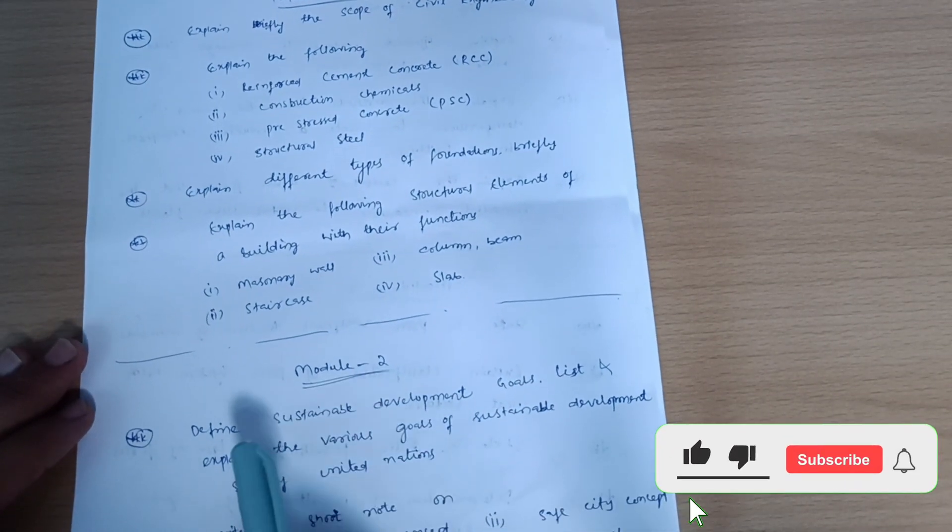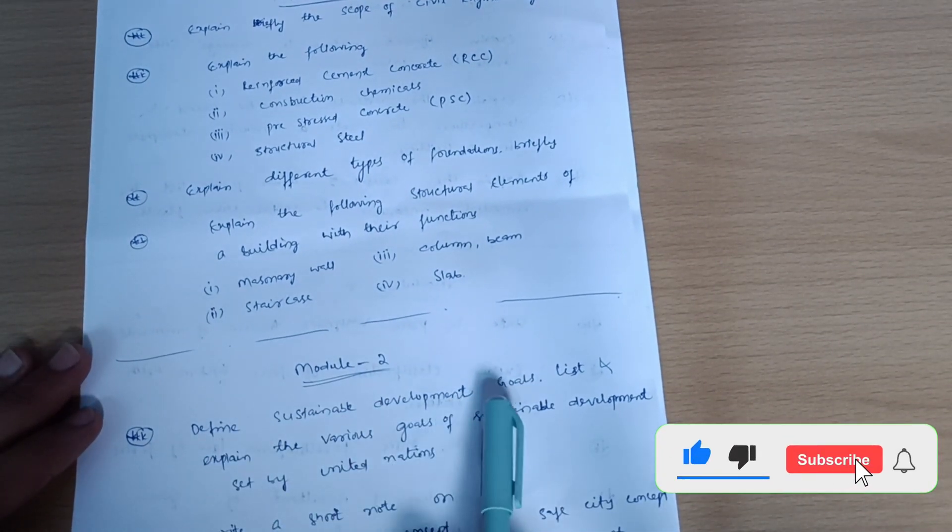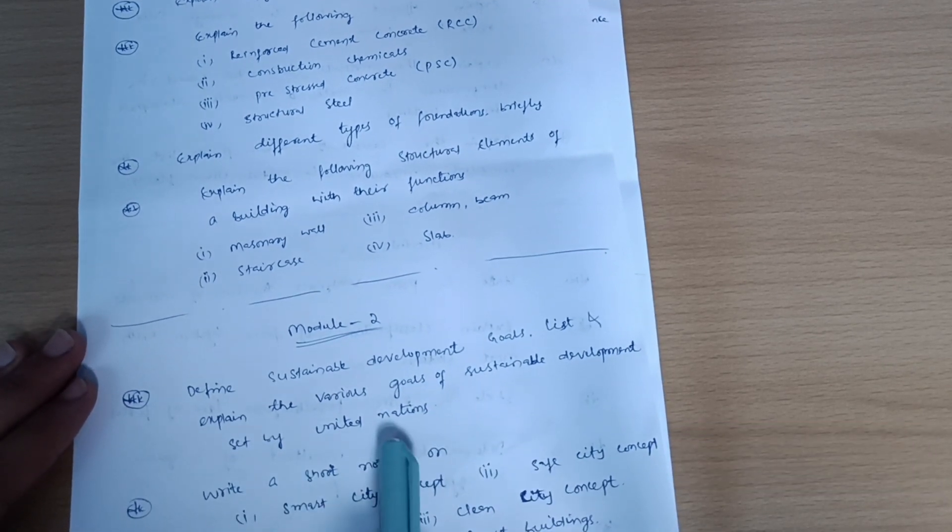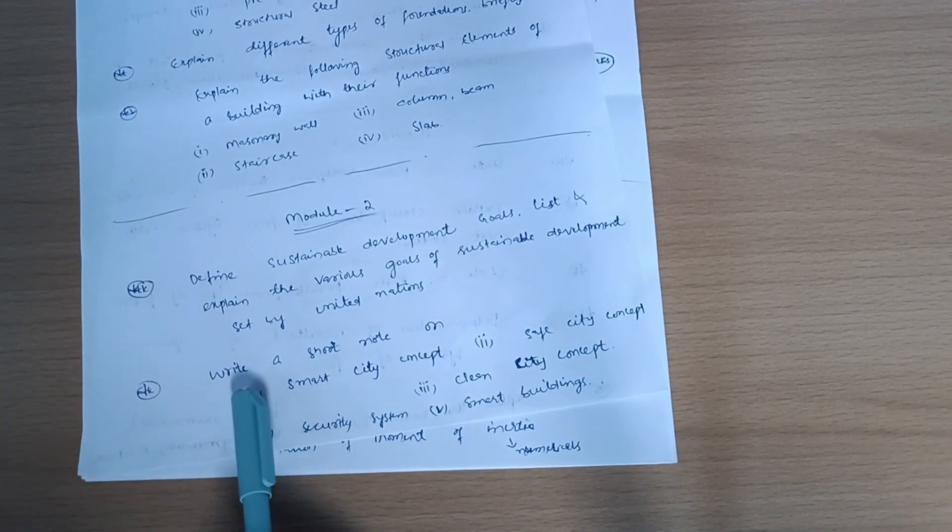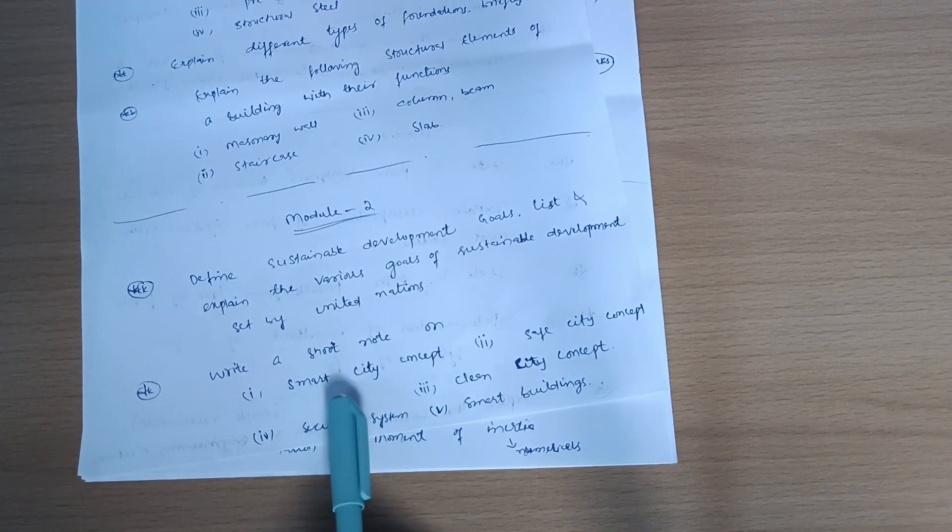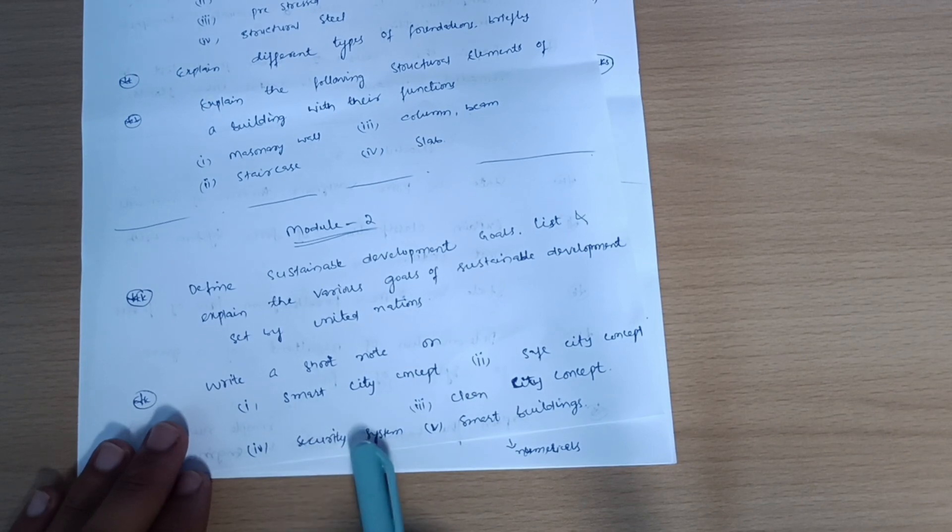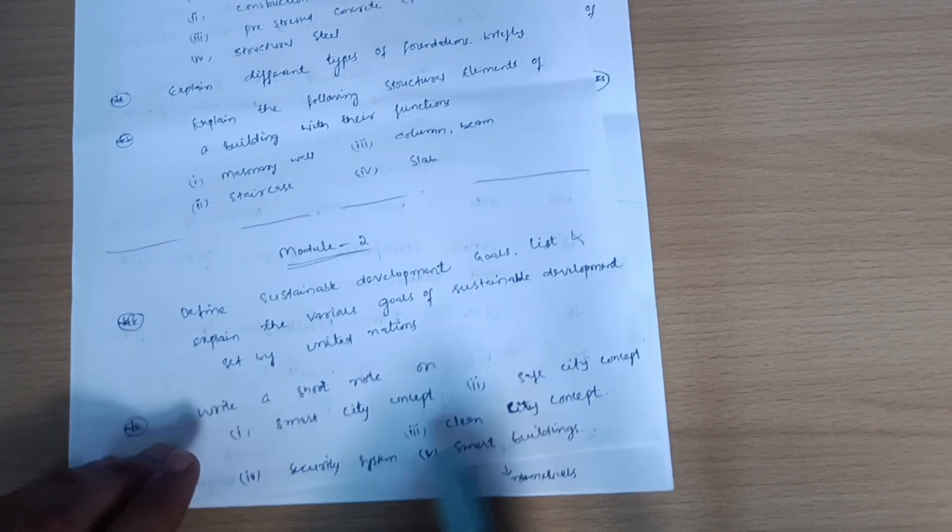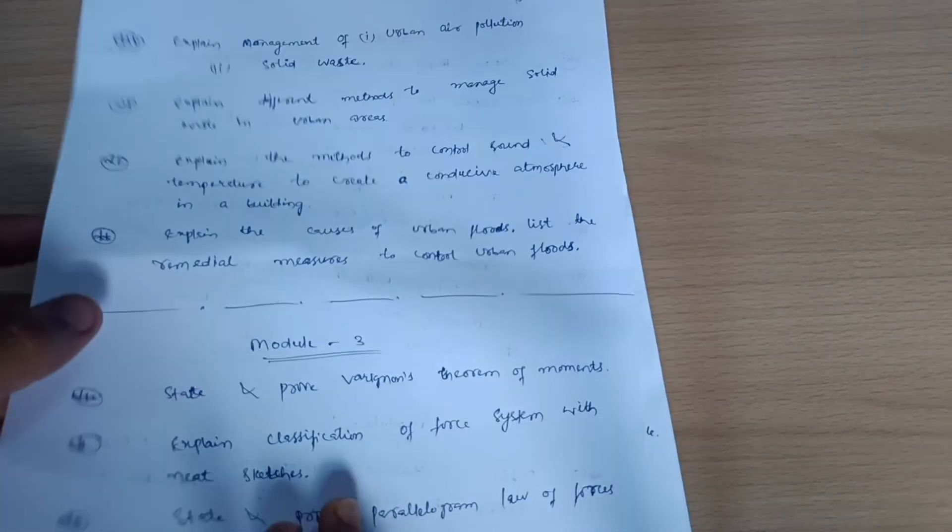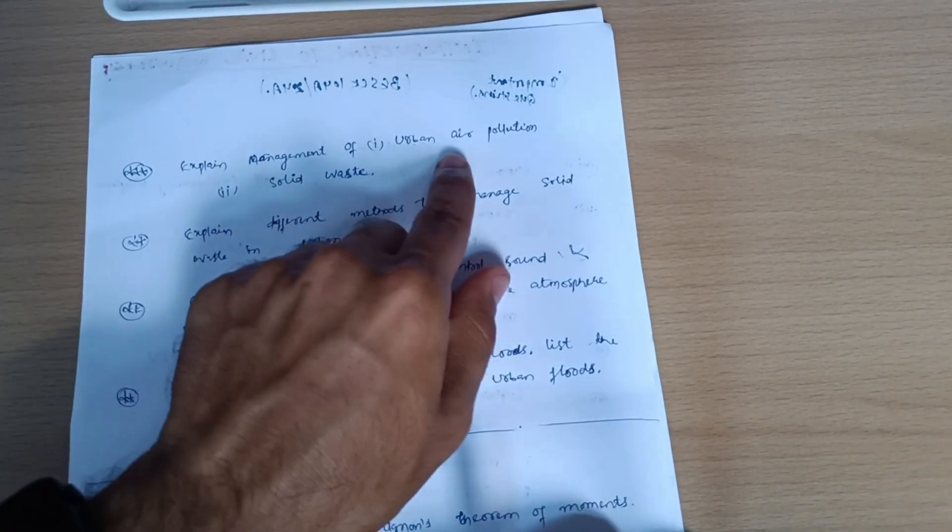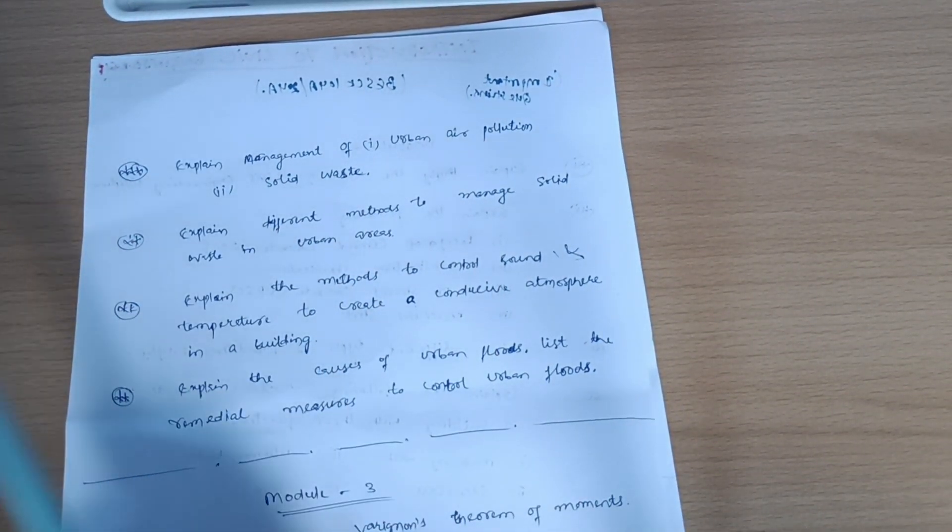Model 2: define sustainable development goals, list and explain the various goals of sustainable development set by United Nations. Write a short note on smart city concept, safe city concept, and clean city concept and security system, smart buildings. Next question is explain management of urban air pollution and solid waste.